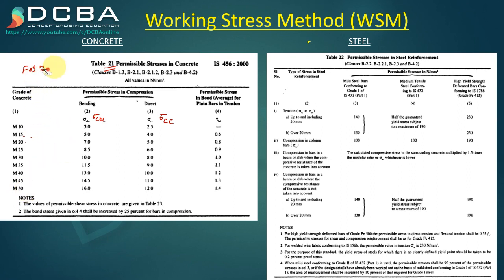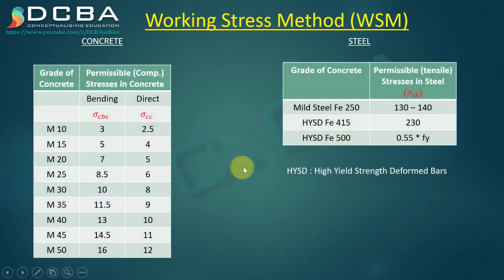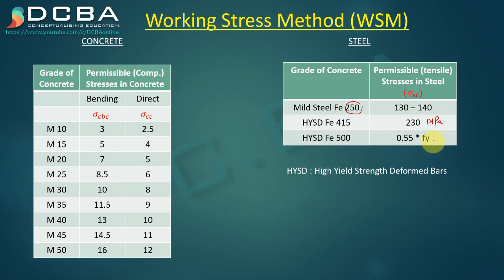Even for M50, do not divide by 3 and assume that is the limiting stress. Whatever is given in the table is final. For steel, the permissible tensile stress for mild steel Fe 250 is around 130 to 140 MPa, for HYSD Fe 415 it is 230 MPa, and for Fe 500 it is 0.55 × FY. There is no single direct value given for Fe 500 — it's proportional to FY.